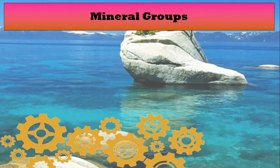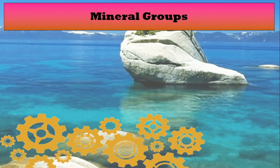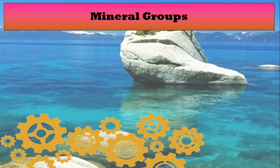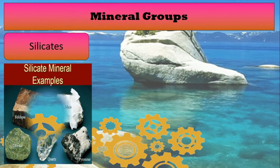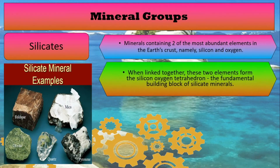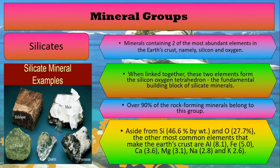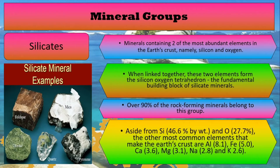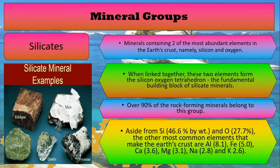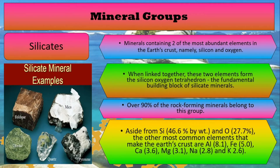These common rock-forming minerals fall into certain mineral groups. First is silicates. Silicates are minerals containing two of the most abundant elements in the Earth's crust: silicon and oxygen. When silicon and oxygen link together, they form the silicon-oxygen tetrahedron, the fundamental building block of silicate minerals. Over 90% of rock-forming minerals belong to this group.